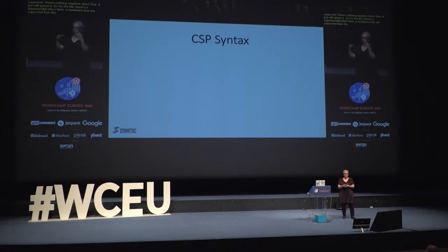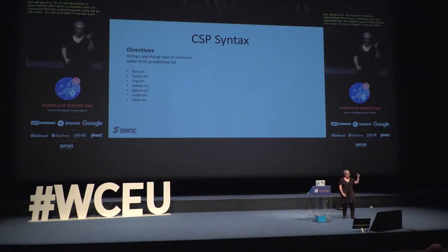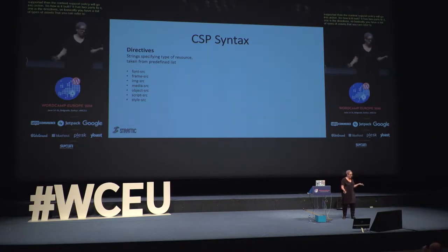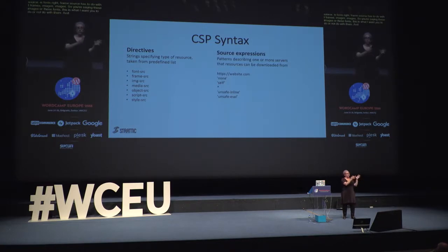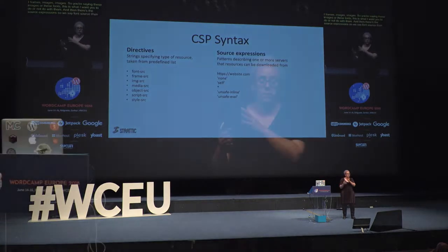How is the content security policy built? It has two parts. One is the directives — a list of types of assets you can refer to. Font source is for fonts, frame source has to do with iframes, images for images, and so on. You're saying: for these fonts or these images, this is what I want you to do or not do with them. Then there are the source expressions: you say 'font-src' and give it certain parameters — for example, font source only from this website. Or for frames, you might say 'frame-src none' — there should be no iframes loading in my site, even from my own server, because iframes are sometimes used for clickjacking attacks.